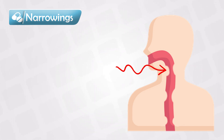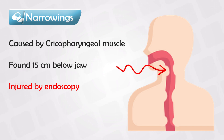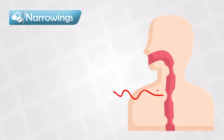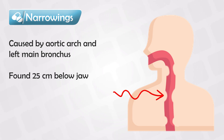The first narrowing is caused by the cricopharyngeal muscle, which is about 15 centimeters below the jaw. Also, this area is most likely injured during endoscopy. The second is caused by the aortic arch, and also by the left main bronchus. This lies about 25 centimeters below the jaw.